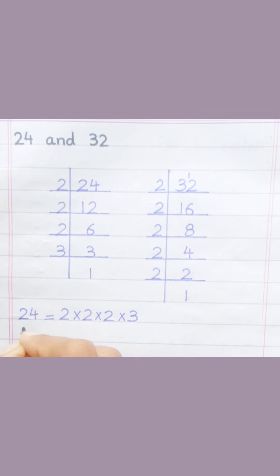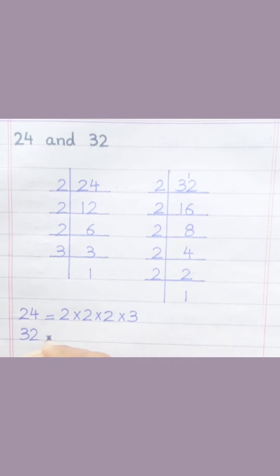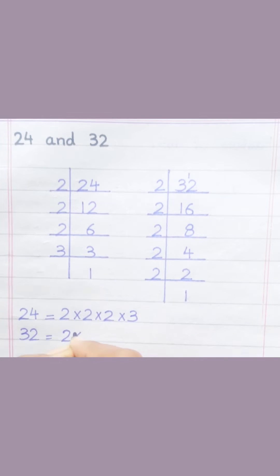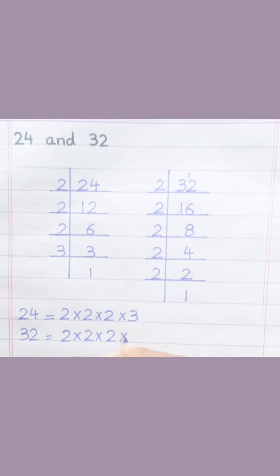Thirty-two equal two multiply two multiply two multiply two multiply two.